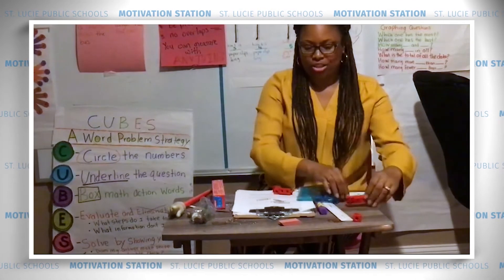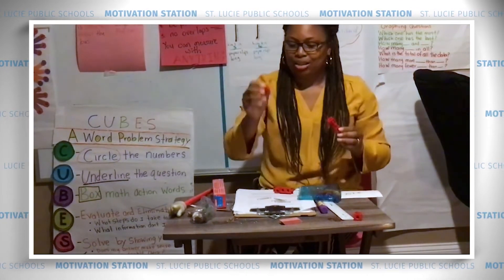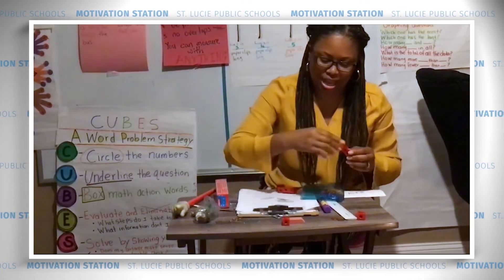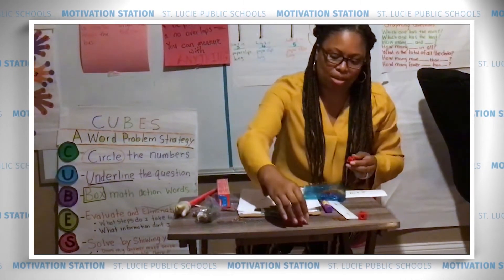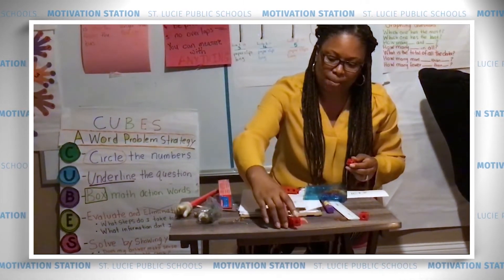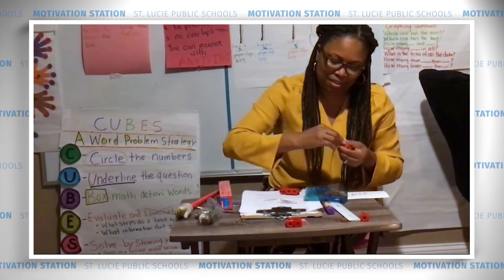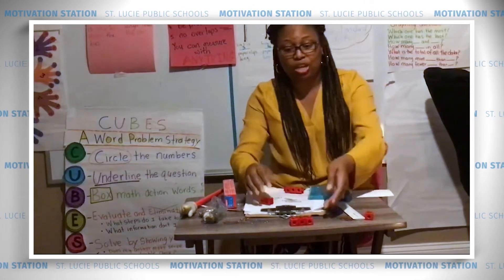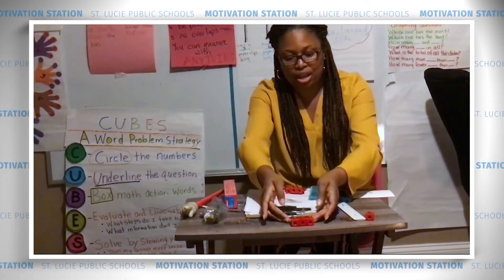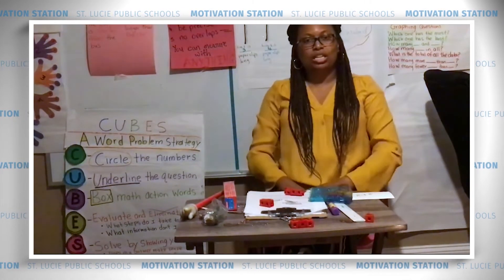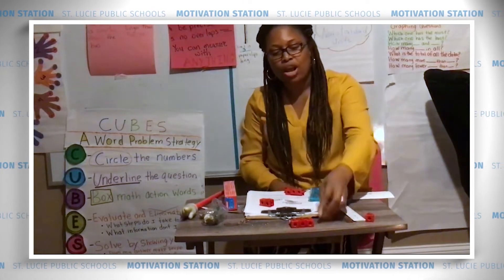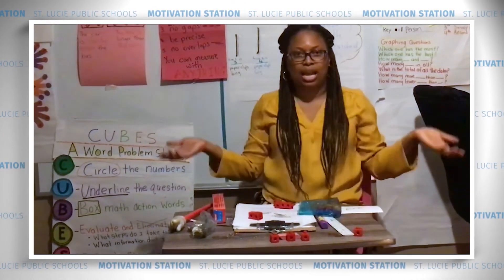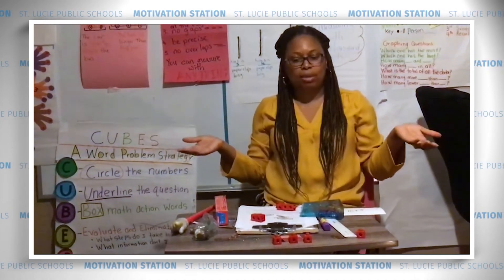How many cubes long do you think the eraser is? Let's see — end to end, one. I thought it was going to be about two, but there's a little space left. If I put another one — it's actually three. So there are three cubes long. Remember: no overlaps, no gaps. If I did that, it would have gaps and I can't measure like that. It has to be precise and go from end to end.